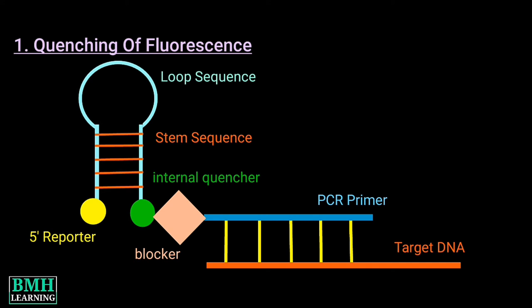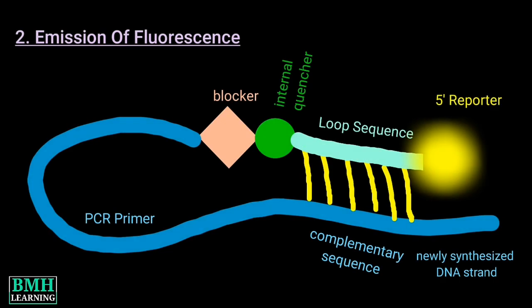During the next cycle, the hairpin loop unfolds and the loop region of the probe hybridizes intramolecularly to the newly synthesized target sequence.